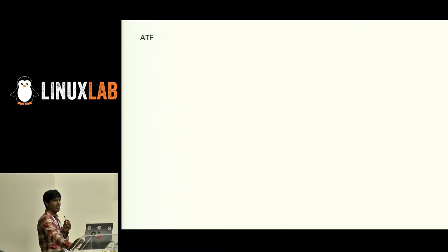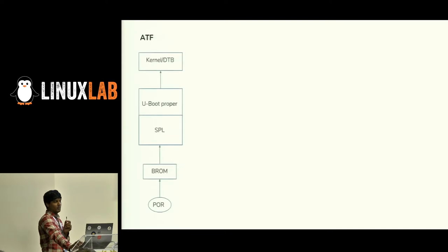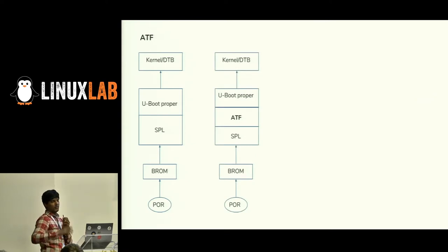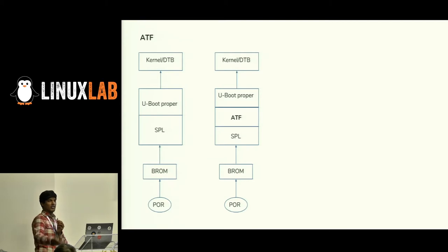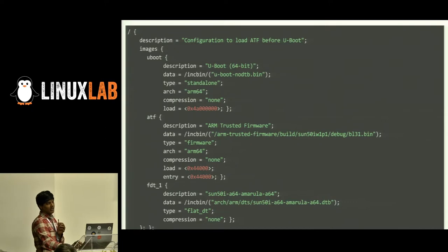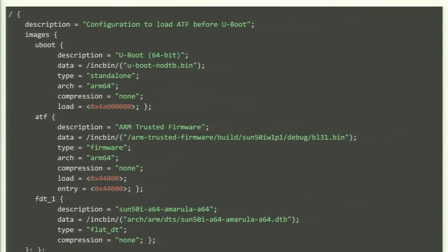There is a concept called ATF — ARM Trusted Firmware — particularly for ARMv8. The typical boot flow for ATF is: after SPL, if we have an ARM64 board and the exception level is EL3, SPL switches to EL3 going into secure mode. ATF runs in secure mode, then switches back to UBoot to exit EL3. So ATF runs UBoot, and UBoot runs Linux. In a typical FIT image for ATF, you can mention UBoot as well as ATF alongside Linux and DTB.